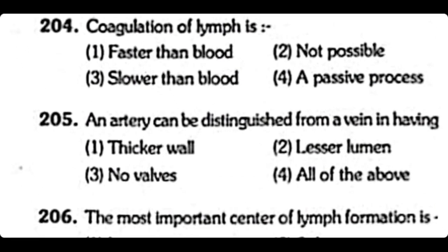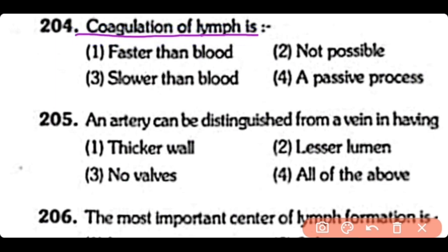Q204. Coagulation of lymph — it is not faster than blood; it is slower than blood, and it is a passive process. So the correct answer is Option 3. The coagulation of lymph is slower than blood because platelets are absent in lymph.